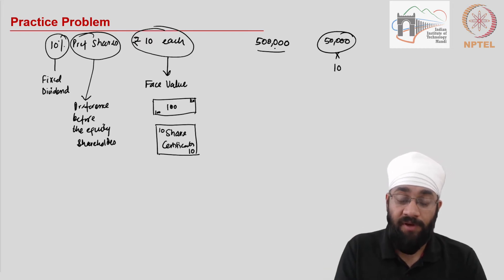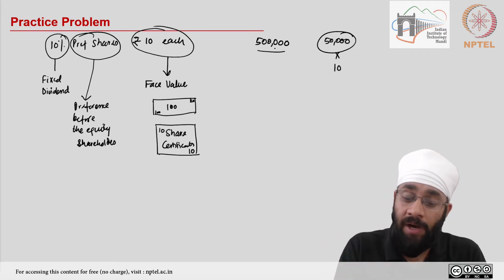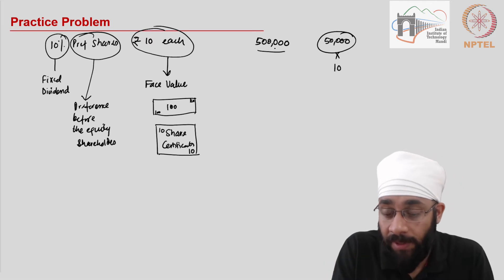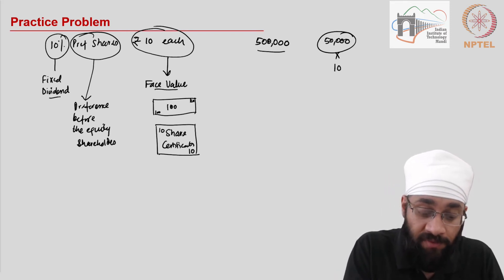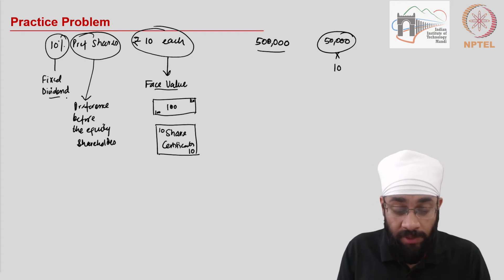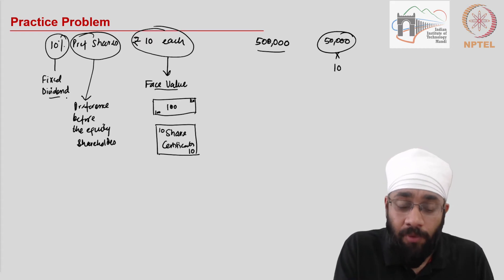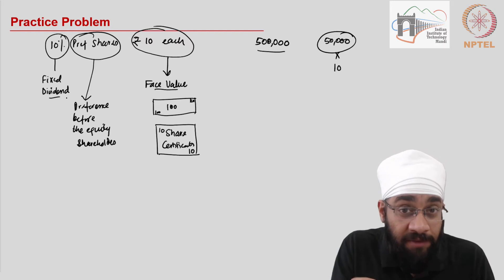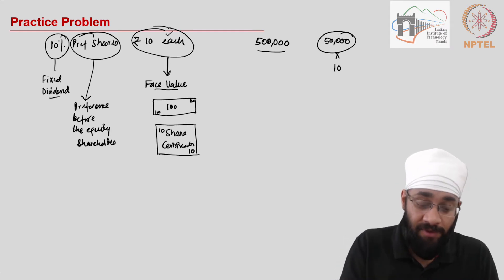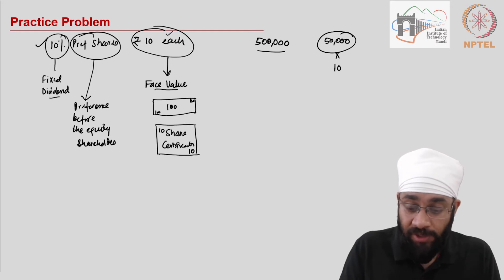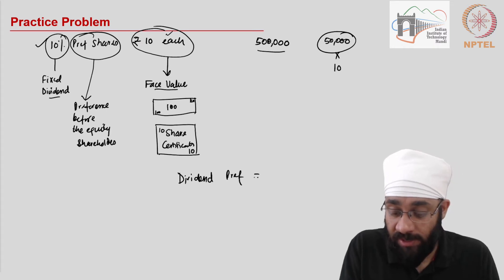In this case there are 50,000 preference shares of rupee 10 each, so 5 lakh rupees were invested in preference shares. Face value is the value at which shares were issued by the company. This is important because the dividend is declared as a percentage of the face value.